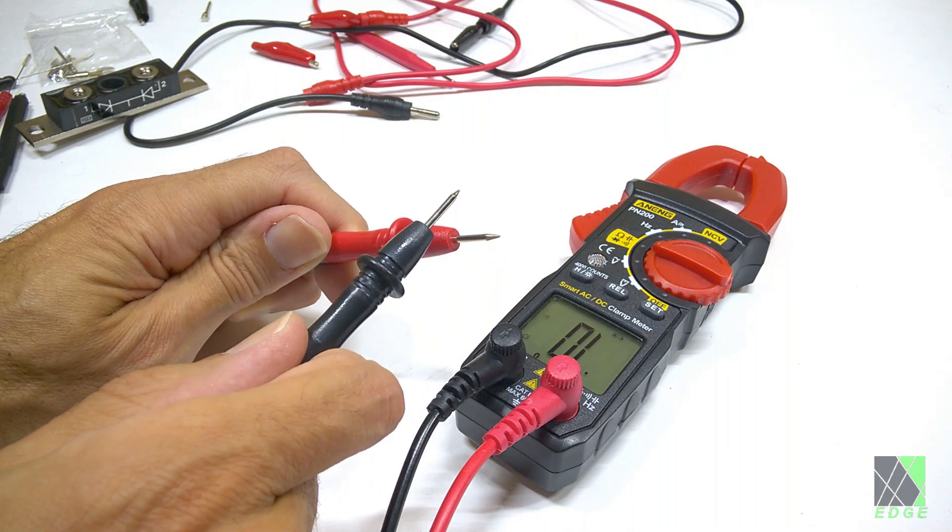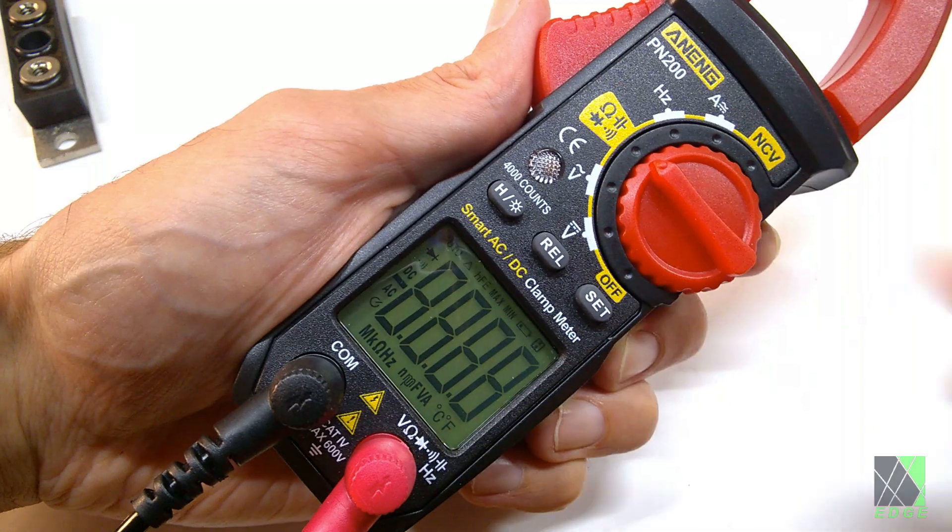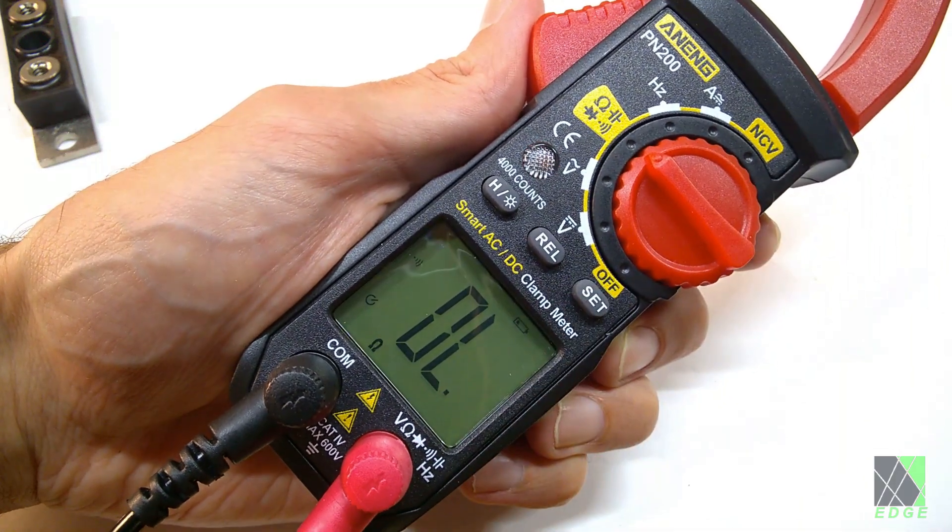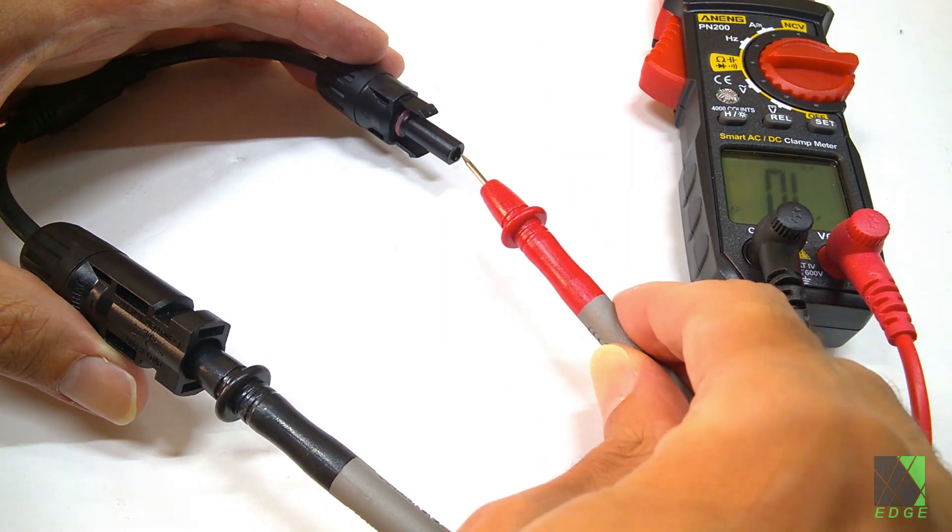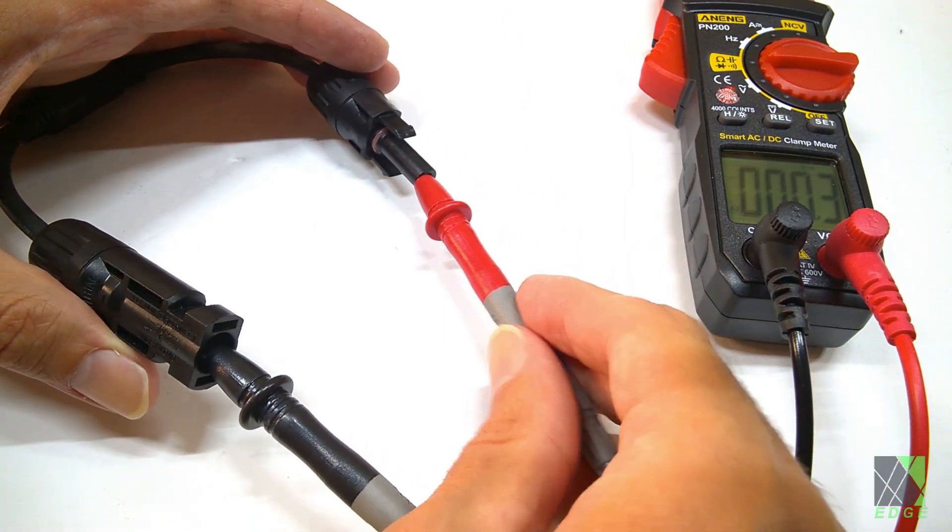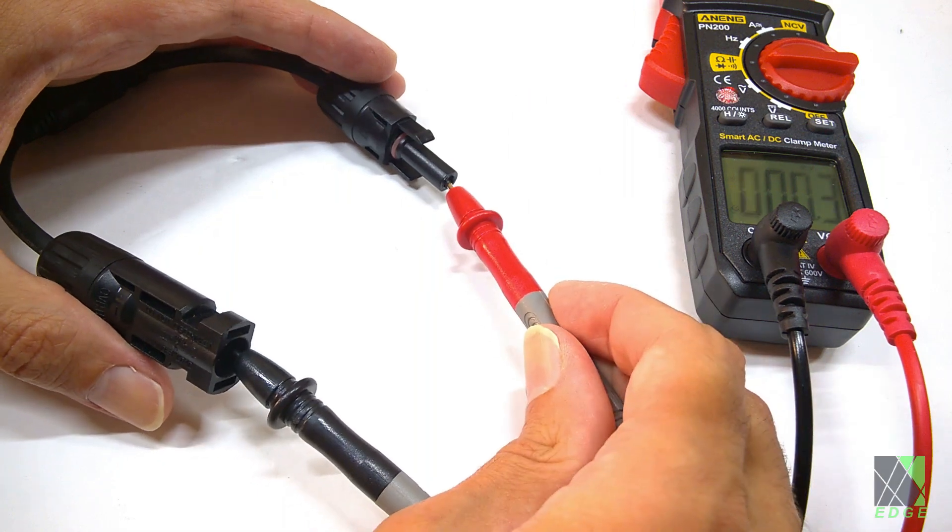Continuity mode. This mode allows you to see if a circuit is conductive or not. For example, you can check plugs and wires to see if they are actually connected. If there is a low resistance conductive path, as would be expected on a power cable that is in good condition, the meter will beep.